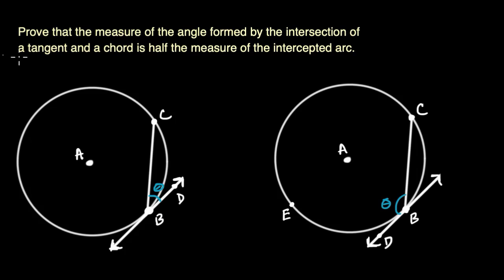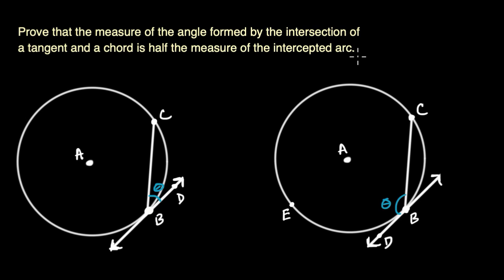What we want to do in this video is prove that the measure of the angle formed by the intersection of a tangent and a chord is half the measure of the intercepted arc. So let's make sense of what we're trying to prove and then we will prove it.